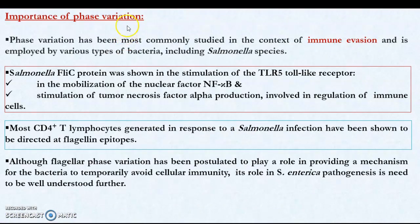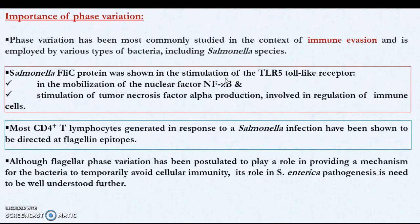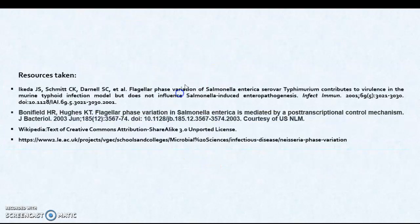The advantage of phase variation for the bacteria is basically to evade the immune response from the host — this is called immune evasion. Studies show that the flagellin proteins, either B or C, elicit an immune response by stimulating the Toll-like receptor, which in turn leads to mobilization of nuclear factor NF-κB and stimulation of tumor necrosis factor alpha (TNF-α). This TNF-α is involved in the regulation of immune cells. So flagellin proteins are able to stimulate the immune response in the host system.